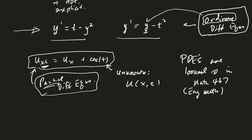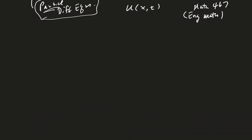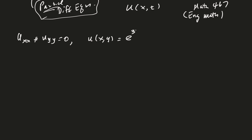Even so, let's look at an example. Suppose we have u sub xx plus u sub yy equals 0, and I tell you that u of xy equals e to the 3y cosine of 3x might be a solution. Can we check that? To do so, we need to perform the operations that the differential equation is suggesting.